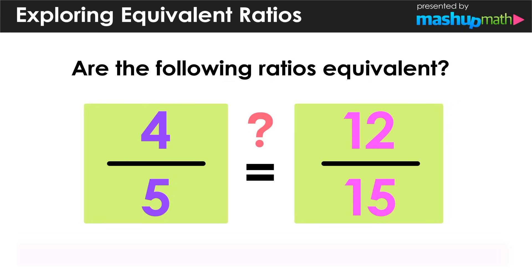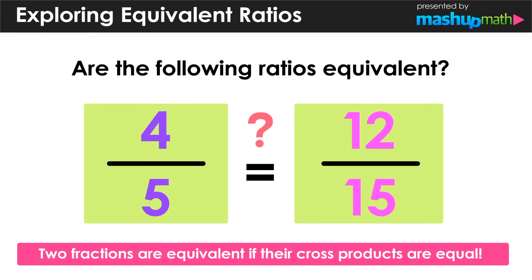This allows us to determine if the two ratios are equivalent, because we know that two fractions are equivalent if their cross products are equal. We'll find those cross products and see if they're equal, and if they are, then we can say these are equivalent fractions.